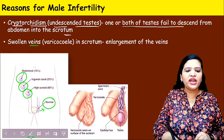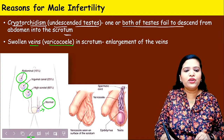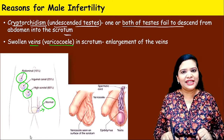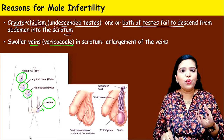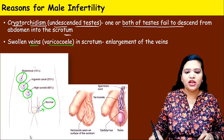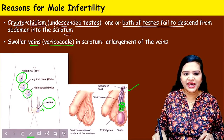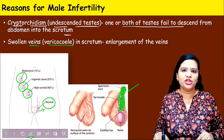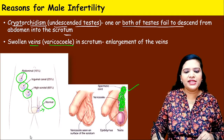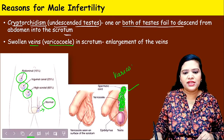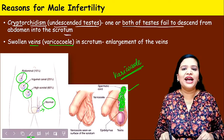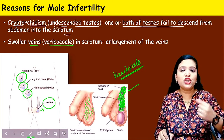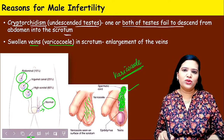The second reason is swollen veins in the scrotum, called varicocele. We know varicose veins occur in the legs — a similar condition occurs in the veins of the scrotum. The veins get enlarged and twisted, becoming cord-like structures. This is called varicocele, and in this condition the man will have infertility. The structure will appear as a twisted mass in the scrotum.